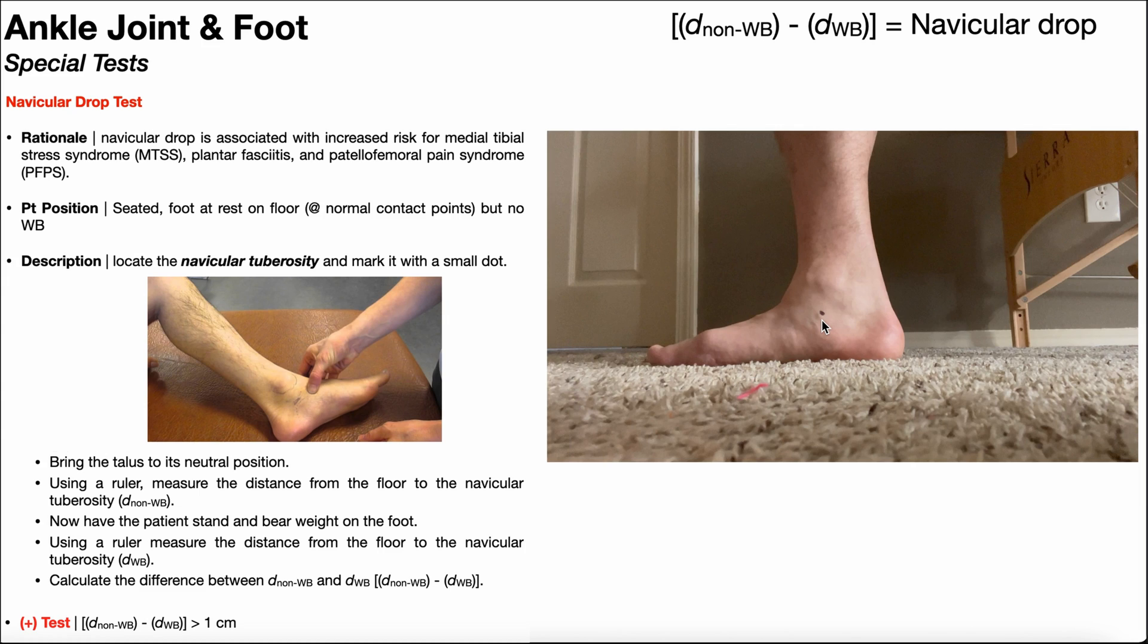The navicular is palpable on the medial aspect of the foot, and the navicular tuberosity specifically is inferior and anterior to the medial malleolus.